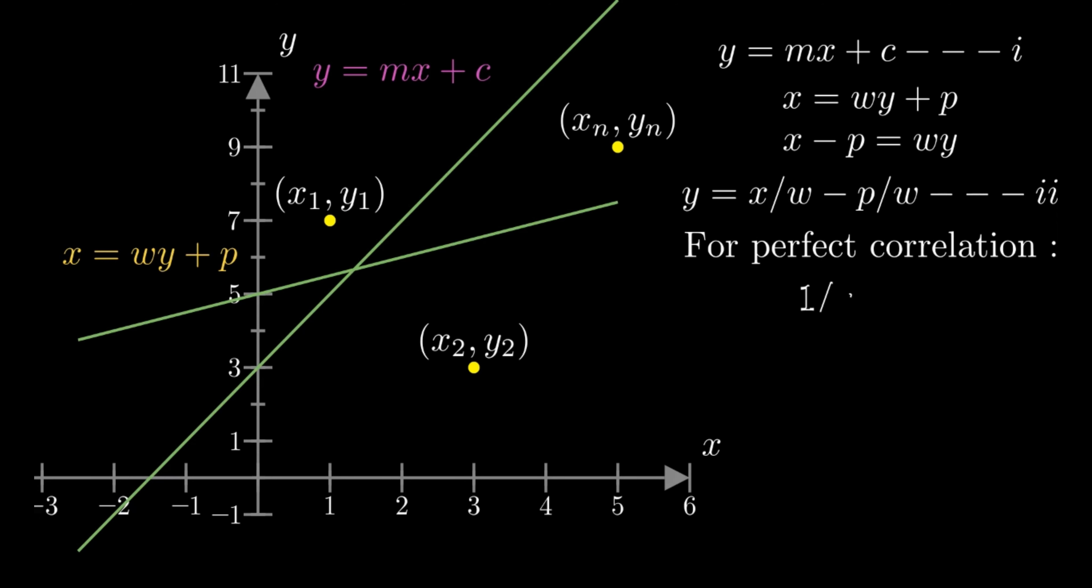That way, for a perfect correlation, 1 by w equals m, which follows that 1 equals wm. Now that piece of information is worth noting for future reference. This makes the heart of the formula that we are delving deep into today.